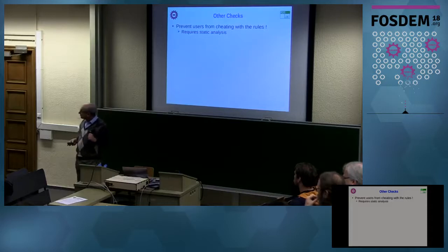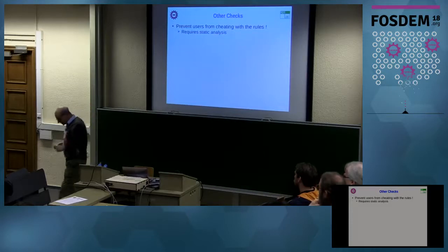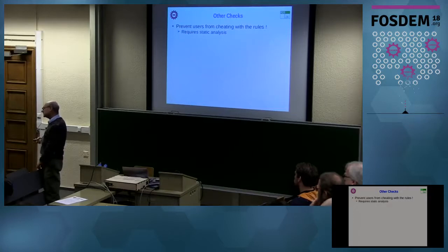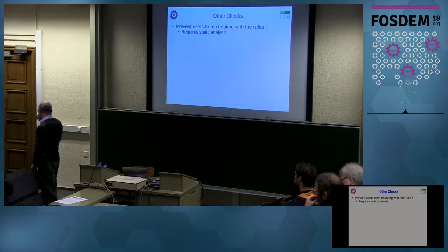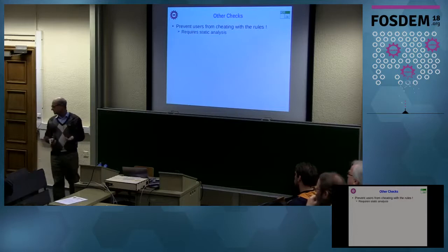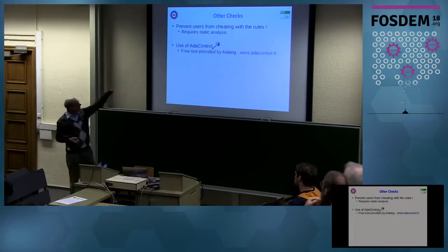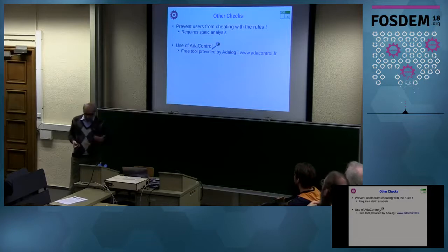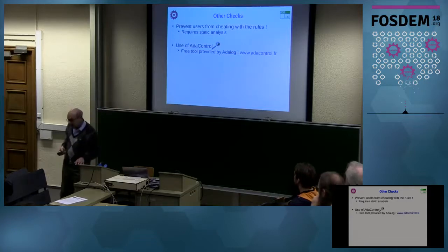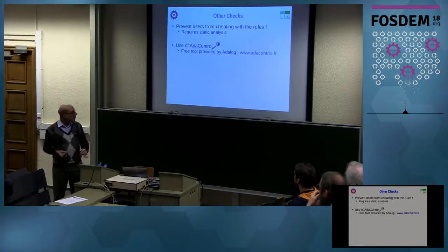Q: What exactly are you trying to prove? What's the property you're trying to convince your safety people of? A: That nobody cheated. For example, you have a way to cheat with the private parts using something called Unchecked_Conversion, and so on. This was complemented with the use of a tool called AdaControl, developed by Adalog, my company. It's a free tool under the GMGPL license — a static analysis tool to check programming rules and various things in Ada programs.